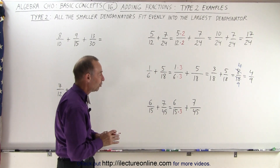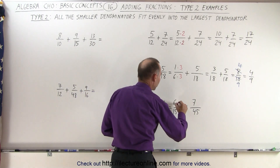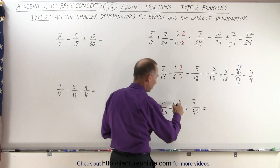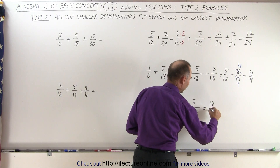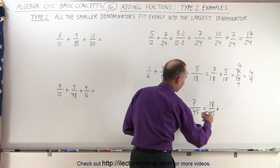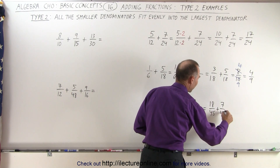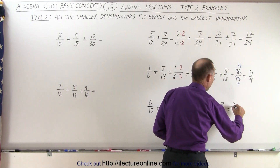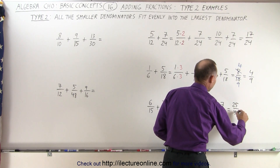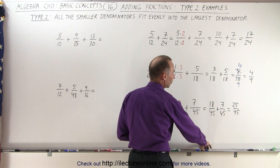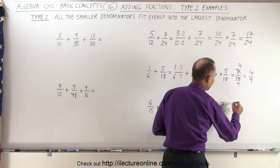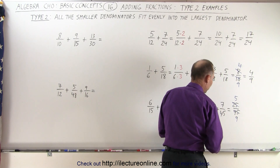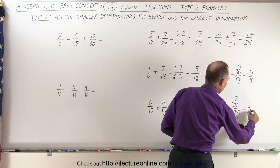If I multiply the denominator by 3, I must also multiply the numerator by 3. Now I can rewrite the two fractions: the first fraction becomes 18 over 45, and the second fraction stays the same as 7 over 45. Now that they're both over the same denominator, I can simply add the numerators, which gives me 25 over 45. It looks like I can reduce that fraction because they both end in a 5. So 25 divided by 5 is 5, and 45 divided by 5 is 9, so this fraction reduces to 5 over 9.